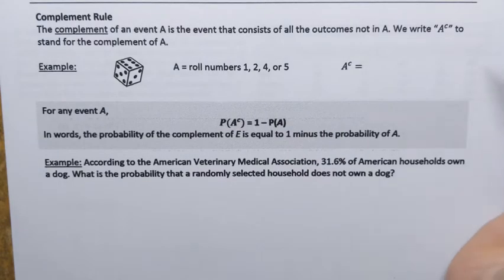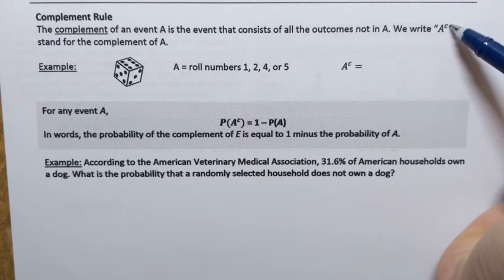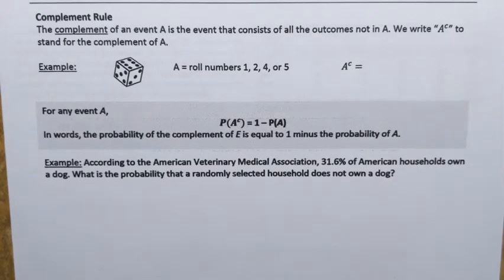One of the common notations for denoting a complement event is by placing little c on the top. Let's look at a quick example that illustrates a complement.